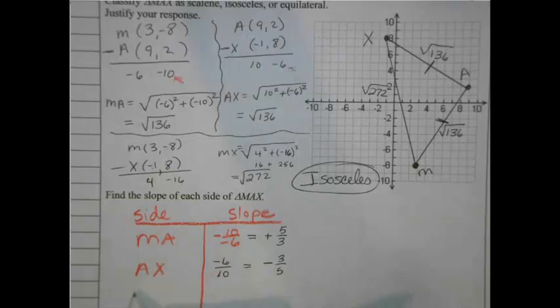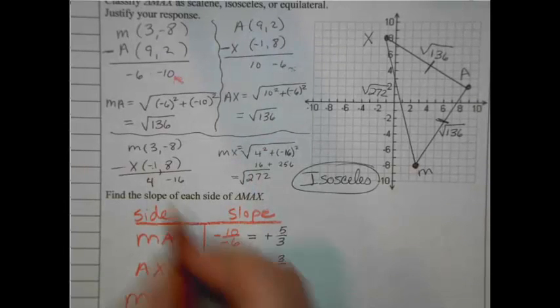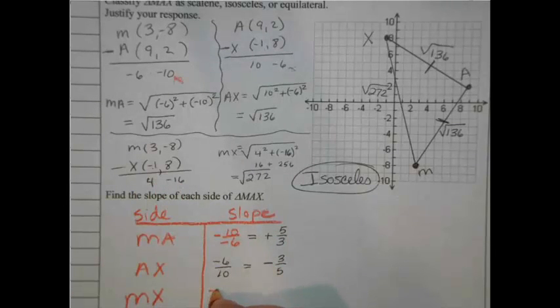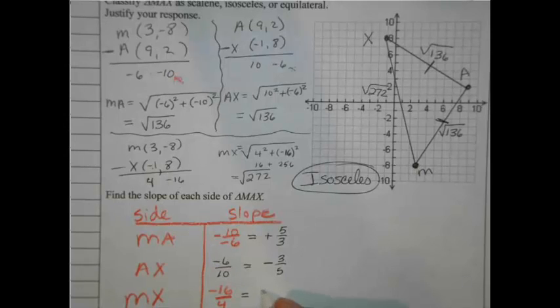And then my last one. On my last one here, I've got M to X. So MX is - here's my numbers for M and X right here. So this is the rise, -16. Put that over the run of 4. -16 over 4. That definitely simplifies. It's still negative. But I can divide both of those by 4. 16 divided by 4 is 4, and then 4 divided by 4 is just 1. And since that's on the denominator, I'm going to make that say -4. So there's my three slopes.